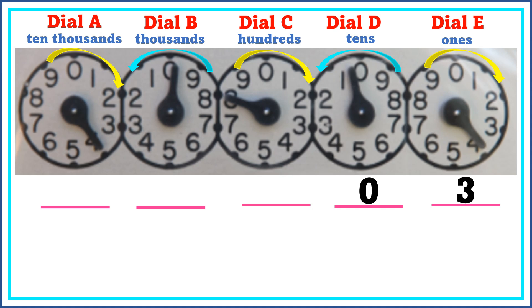In dial C, the pointer is pointing exactly to eight. Looking at dial D, the pointer has already passed zero, so we record this as eight.